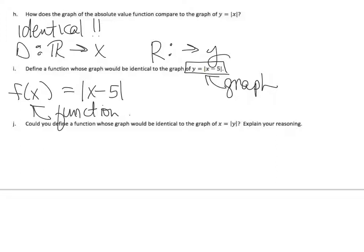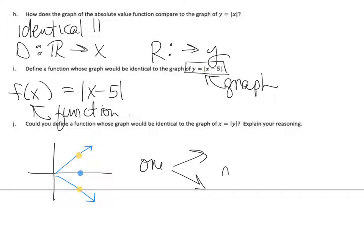Could you define a function whose graph would be identical to the graph of x equals absolute value y? If you remember, for every value of x, we have two values of y. So when we talk about whether it's a function or not, we have one going to many, and we know that is not a function.